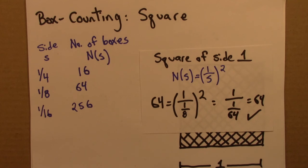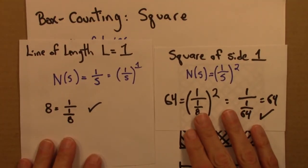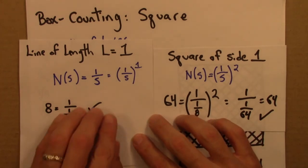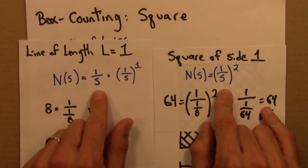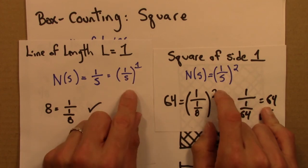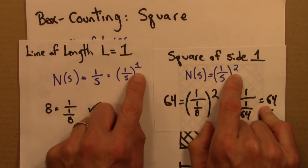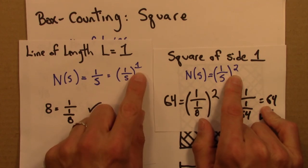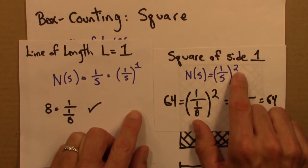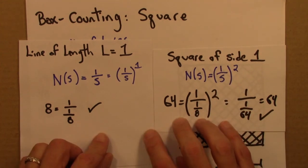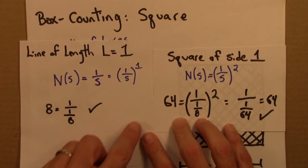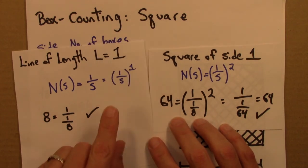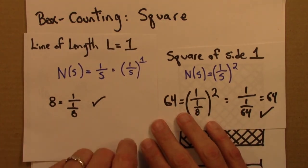So we've played this box counting game for two shapes, a line and a square. And we got very similar formulas. They're here in blue. The difference is these exponents. And the reason we see this difference is that these shapes have different dimensions. A line is one-dimensional, and a square is two-dimensional. So before we go on to consider other sorts of shapes for this, you might want to try out these ideas in the short quiz that immediately follows this video.